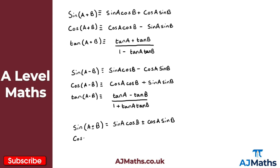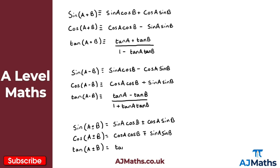For cosine, cosine of A plus or minus B gives cosine A cosine B, minus or plus sine A sine B. And for tangent, tan of A plus or minus B is expressed as tan A plus or minus tan B, all divided by one minus or plus tan A times tan B. These three results at the bottom are what you'll see in the formula book.